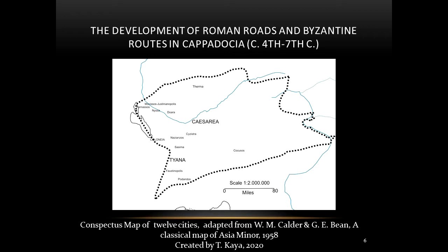Almost all of the routes established in the imperial period continued to function for people, goods, and armies. When Constantinople became the capital of the Roman Empire, routes leading to the capital gained importance. Hence, the pilgrim's road from Constantinople to the Cilician Gates, which touched upon the region of Cappadocia and included the cities of Colonia, Tayana, and Faustinopolis, continued to be used for both economic and political reasons.